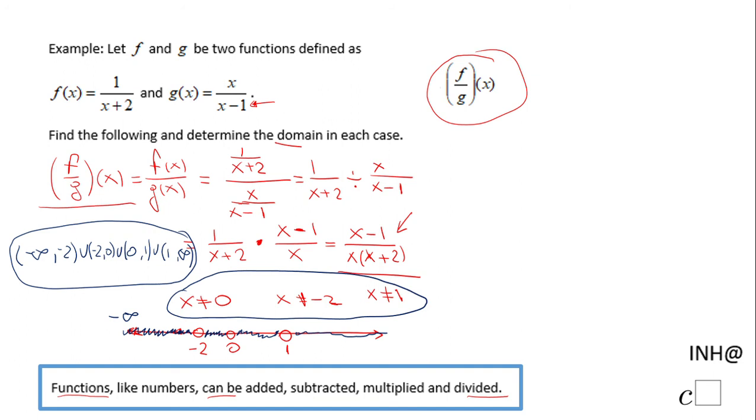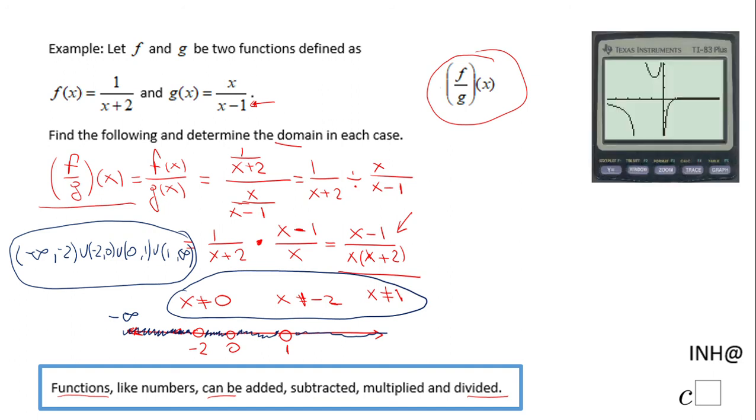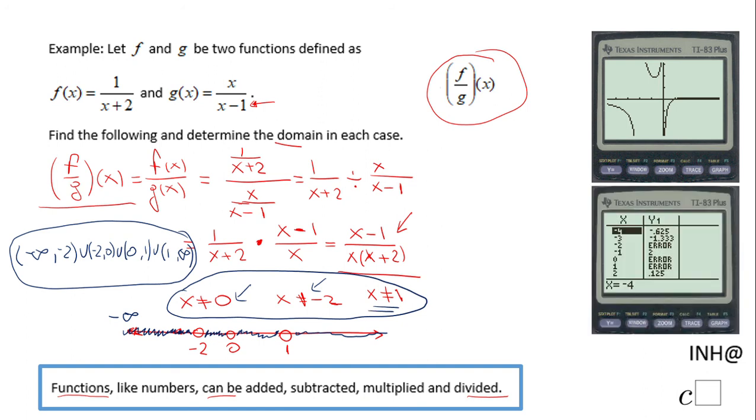I'm going to check this result using the graphing calculator. You can see vertical asymptotes at negative 2 and 0. What happened to x equals 1? At x equals 1, there's a hole that you don't see unless you zoom in. You will see we have an error at 1, at 0, and at negative 2.